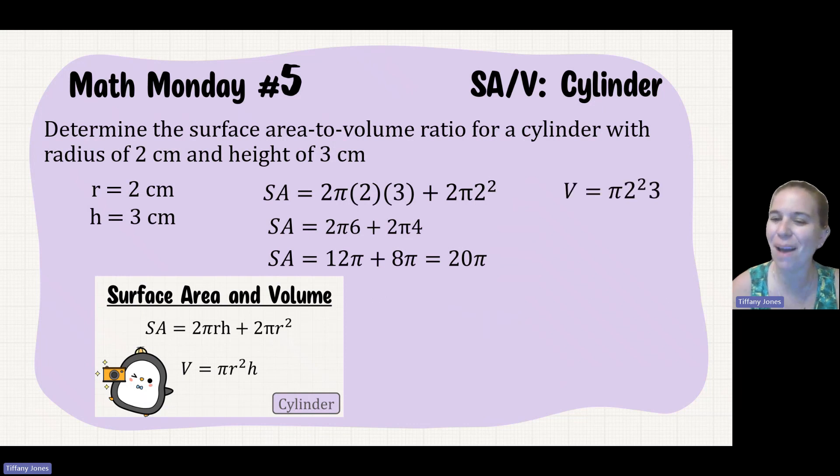Our volume is going to be πr, r being 2 squared, times our height being 3. 2 squared is 4, 4 times 3 is 12. And again, that π is coming along for the ride.